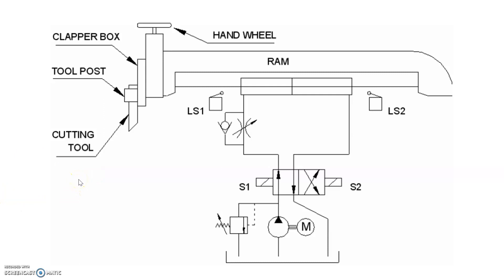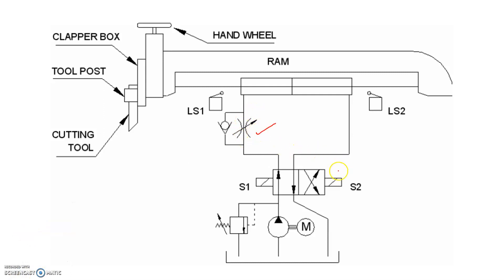The equipment used here: LS1 and LS2 are the limit switches — one at the extreme end of the forward run and one at the extreme end of the return stroke. There is a flow control valve. A 4/2 direction control valve is also used here. Solenoid 1 and Solenoid 2 receive input signals from the limit switches to control the direction of fluid flow.